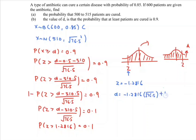Then plus 510.5. So d will be equal to 499.29. If we round up the situation, then d will be equal to 499 patients are cured.